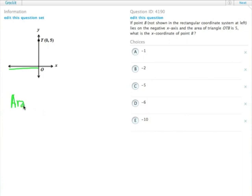Remember the area of a triangle? The area of a triangle is one-half the base times the height. And we know that that equals 5.